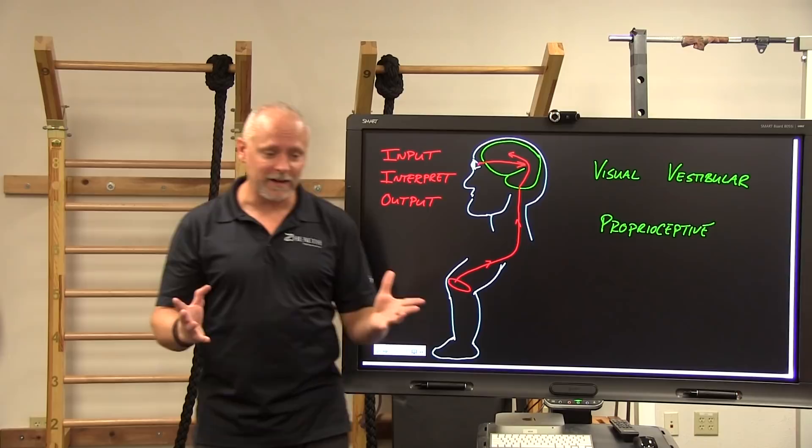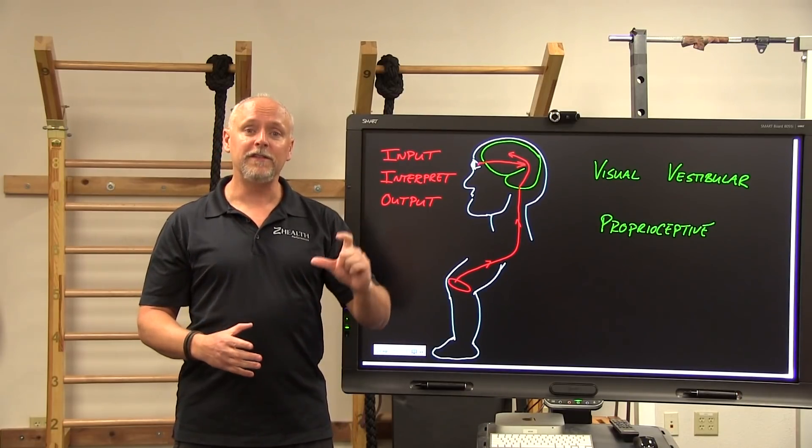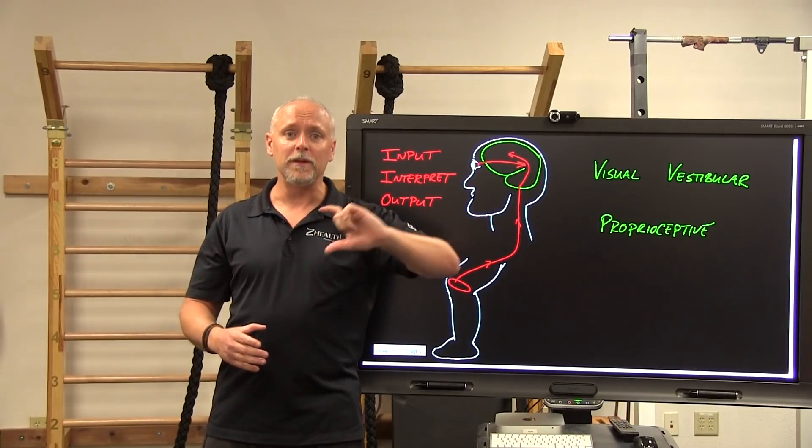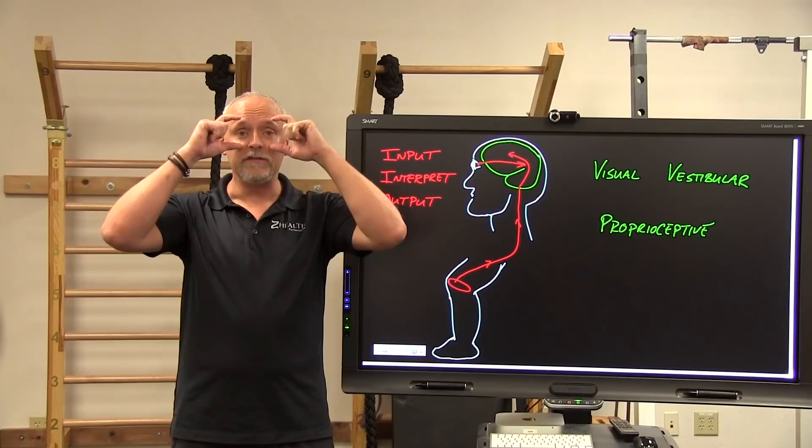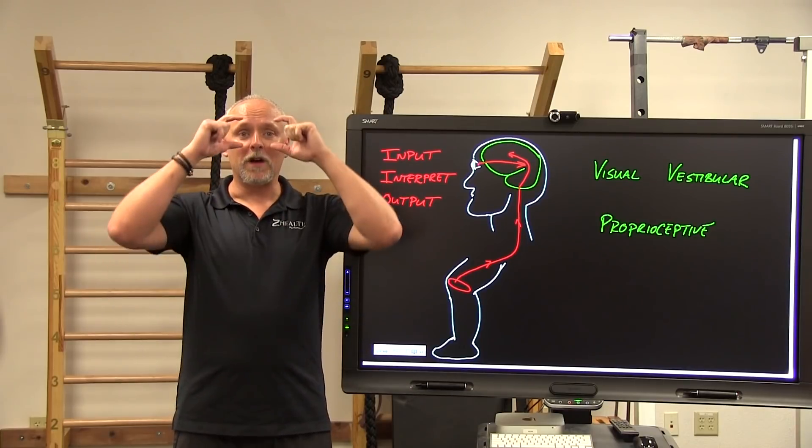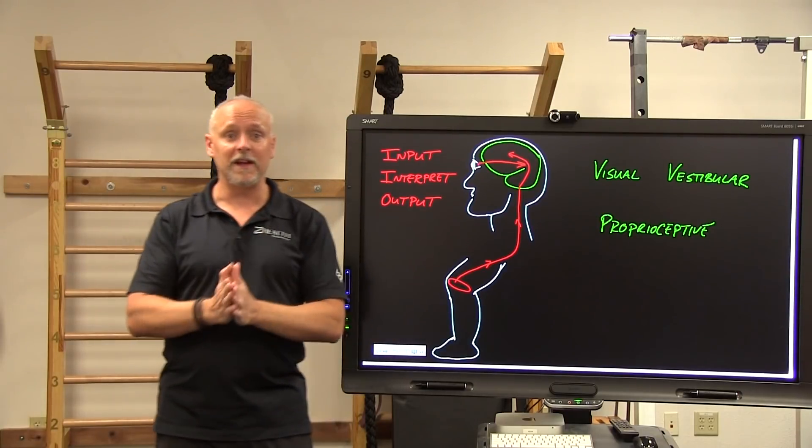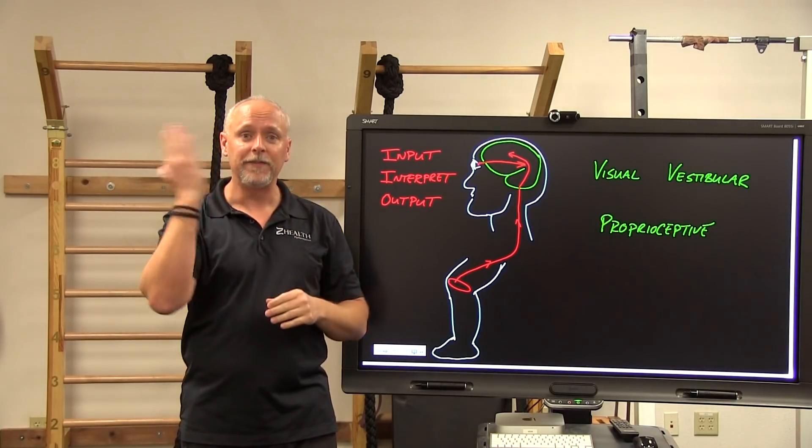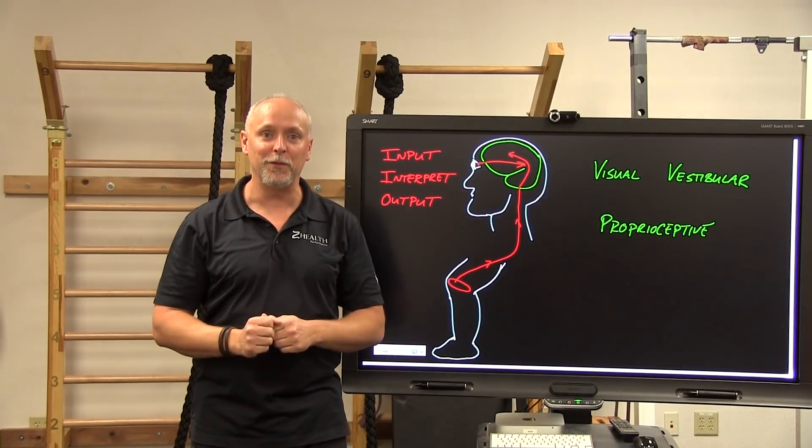In this study, what they did, and this is why it struck me because it reminded me of one of the strategies that we use, is they took these athletes, they looked at their movement capacity, and then they began retraining them by using what are called strobe goggles. Strobe goggles are goggles Nike used to make. There are several other companies that make them, but basically they're exactly what they sound like. They're goggles that you put on and they create a strobe effect, which reduces the amount of visual input that you receive.